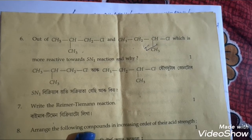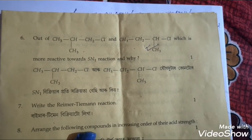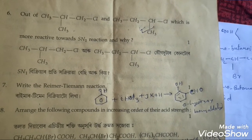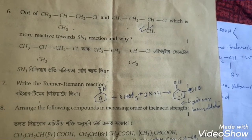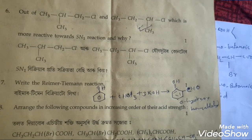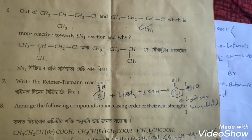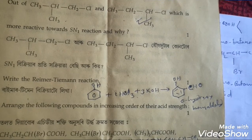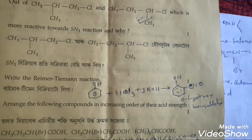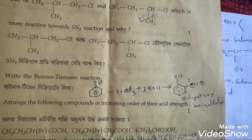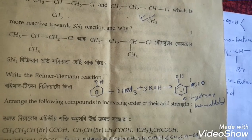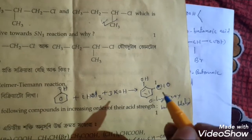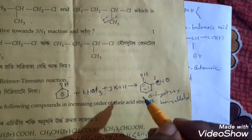The next question is to write the Reimer-Tiemann reaction. In the Reimer-Tiemann reaction, phenol reacts with chloroform and potassium hydroxide and forms ortho-hydroxybenzaldehyde. The reaction is shown here.